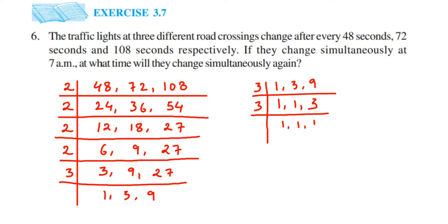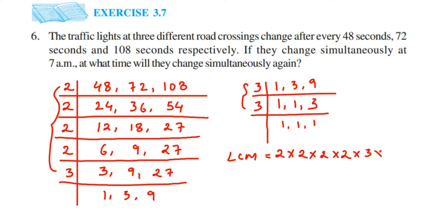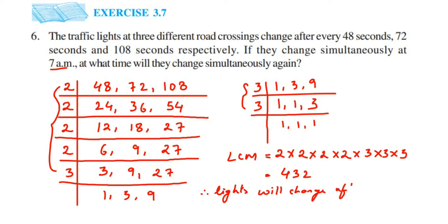Now multiply all the prime factors to get the LCM: 2 × 2 × 2 × 2 × 3 × 3 × 3 = 432. So the LCM is 432, which means the lights will change together after 432 seconds. Since they all changed simultaneously at 7 a.m., the next time they will change simultaneously is 432 seconds later. I hope this question is clear — if you have any doubts, drop a comment. Thank you for watching!